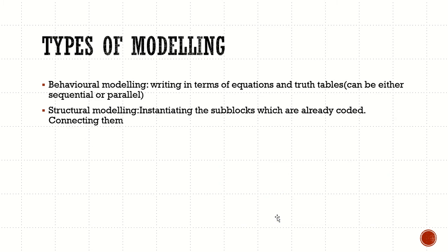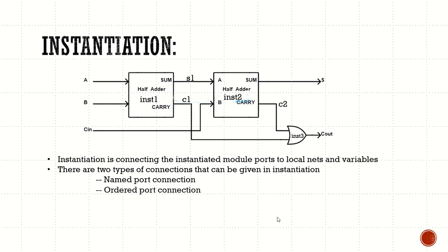There are two types of modeling. One is behavioral modeling, where we use statements in terms of equations or truth tables. The other is structural modeling, where we instantiate sub-blocks that are already coded and connect them. We are now going into structural modeling and learning about instantiation.